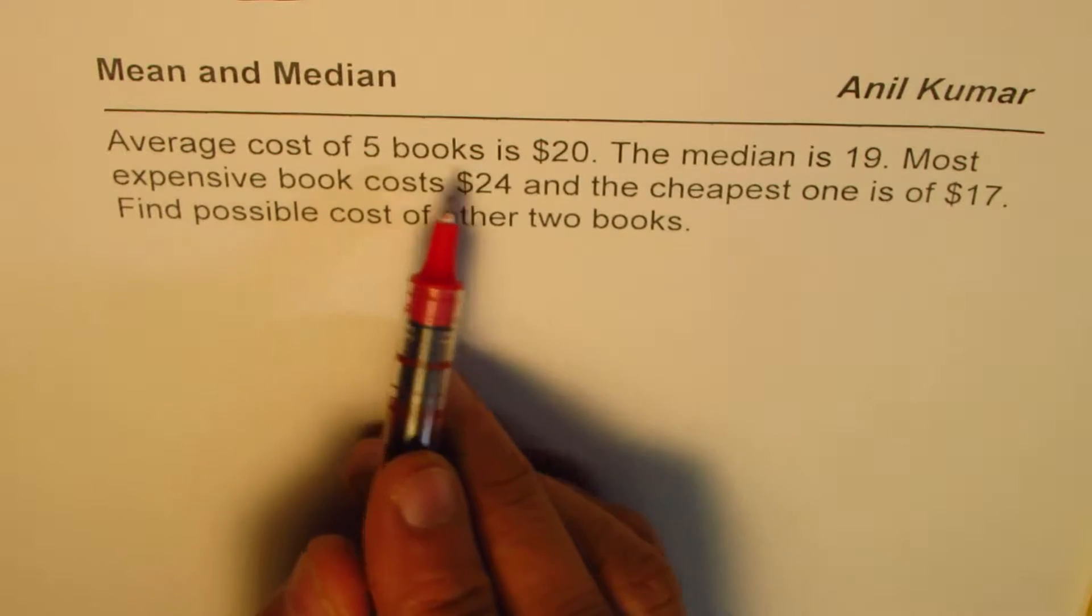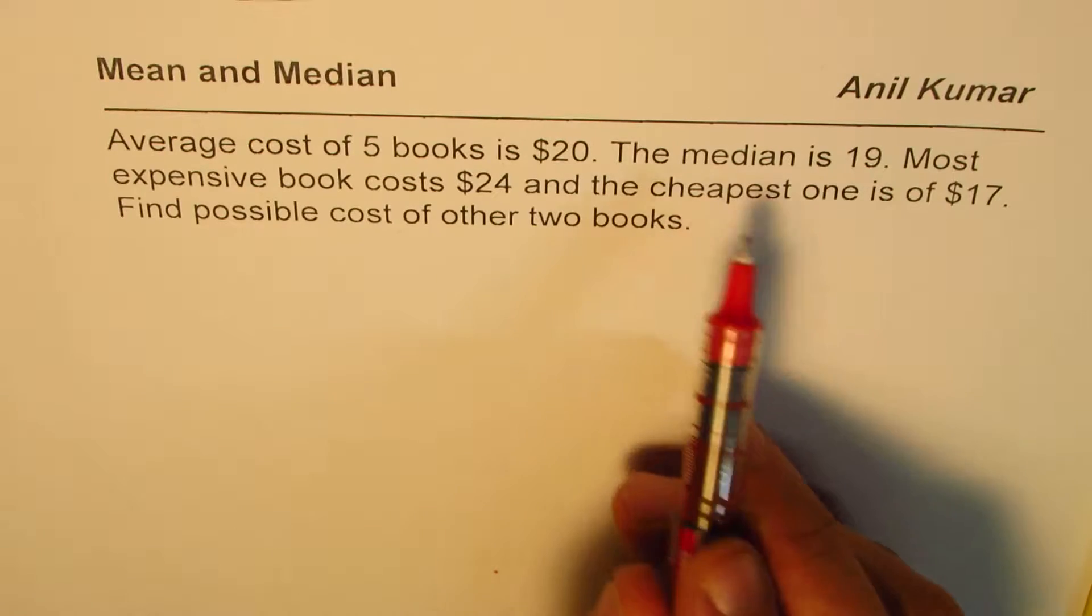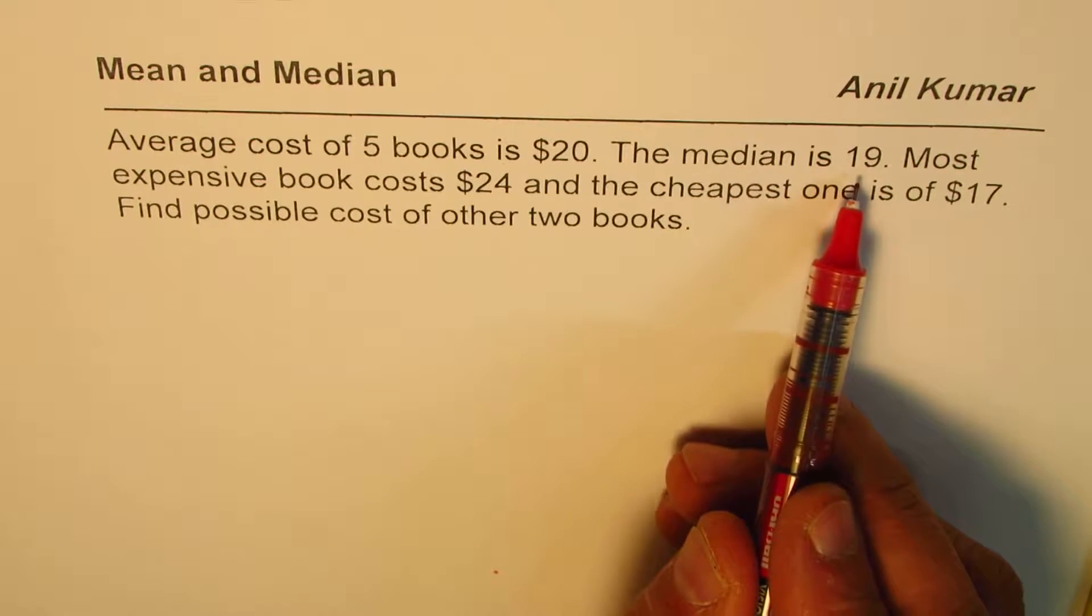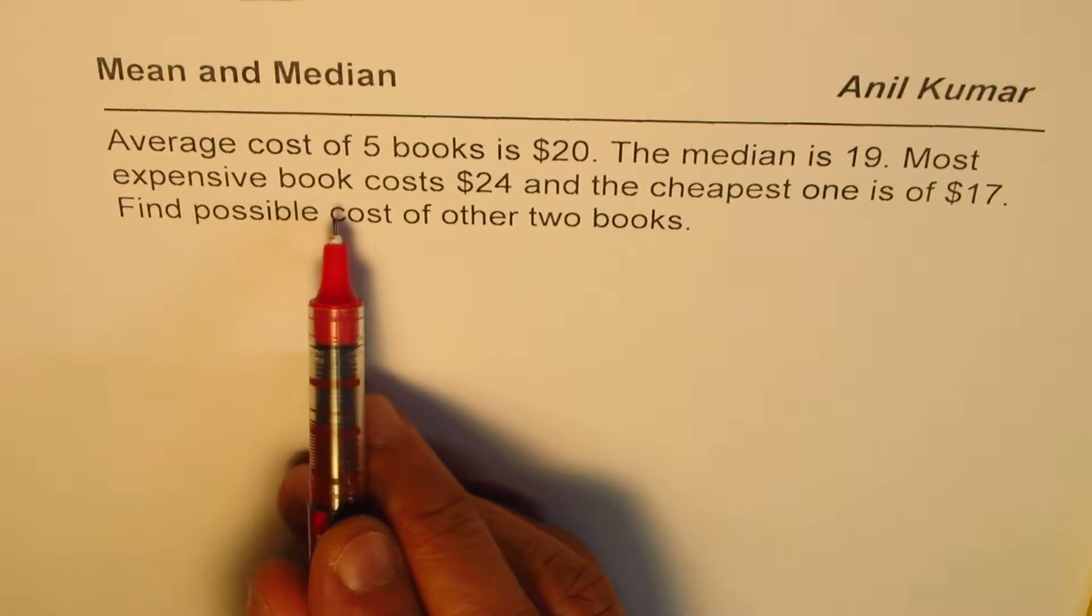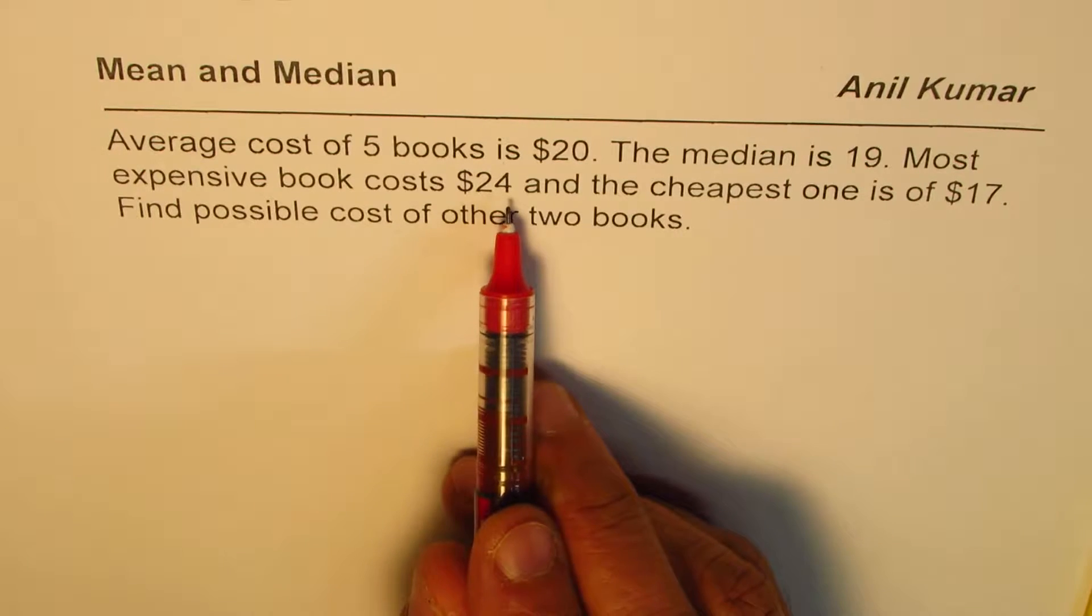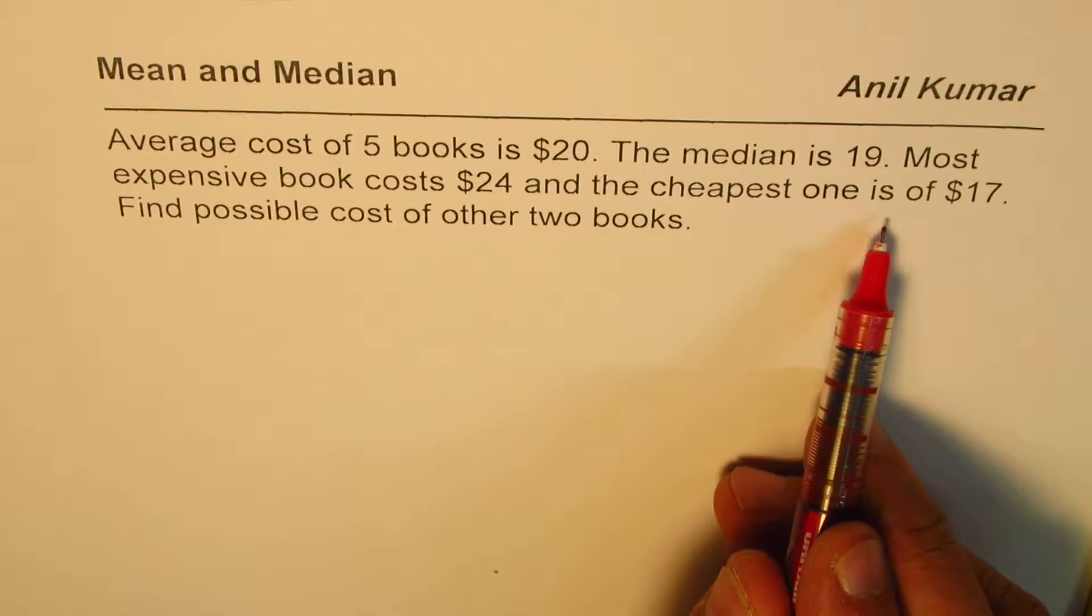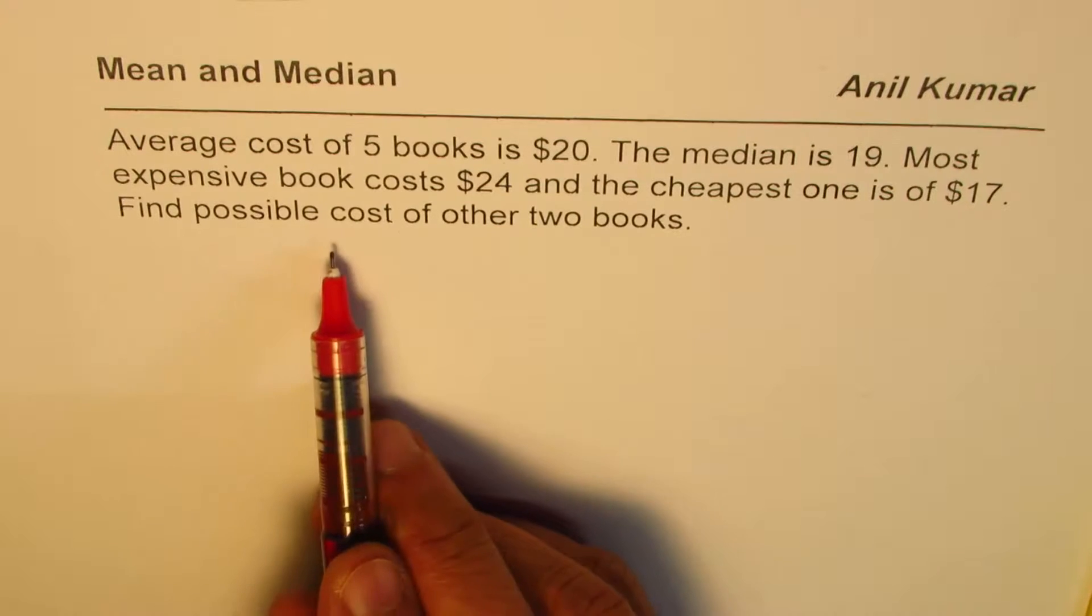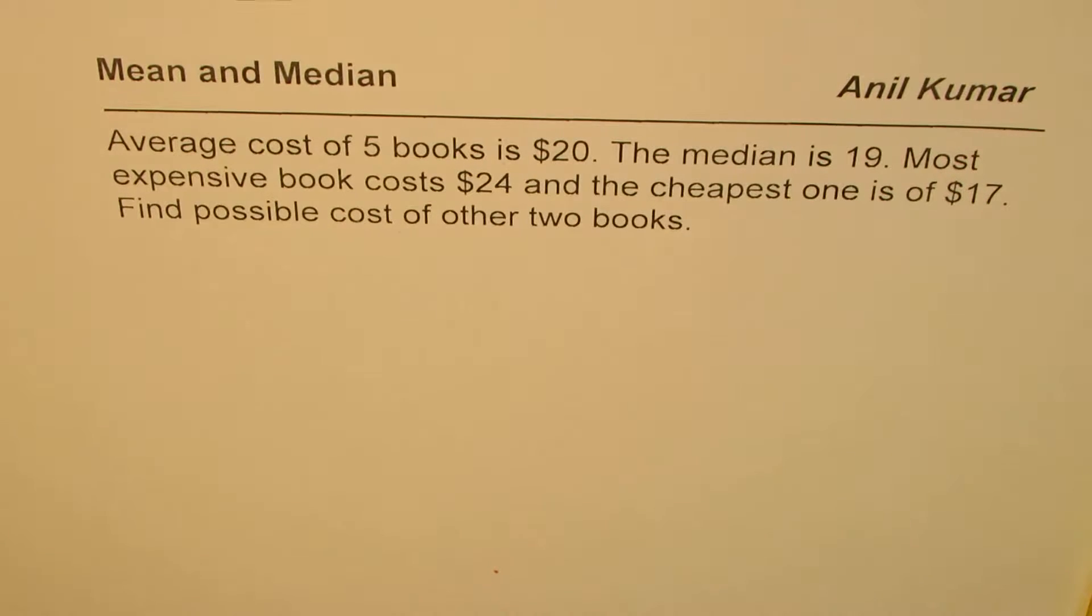Average cost of 5 books is $20. The median is $19. Most expensive book costs $24 and the cheapest one is $17. Find possible cost of other two books.